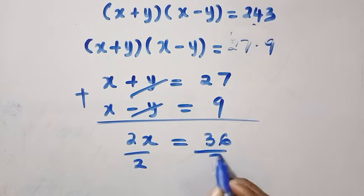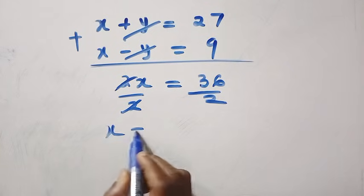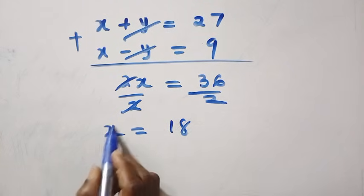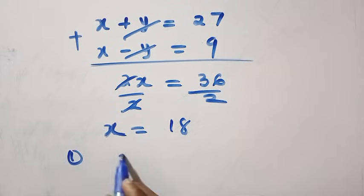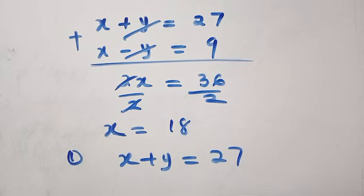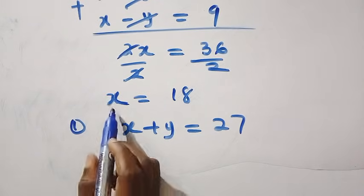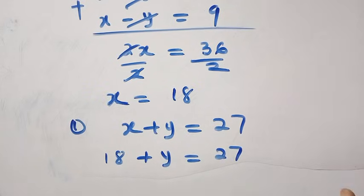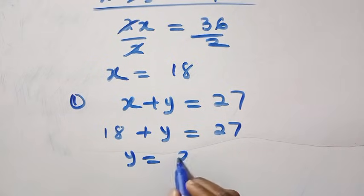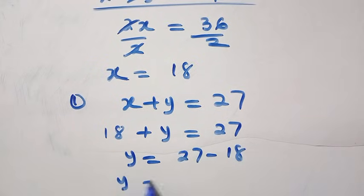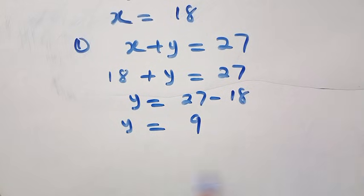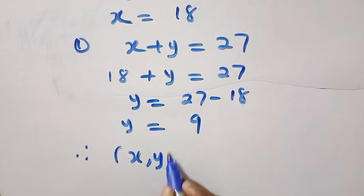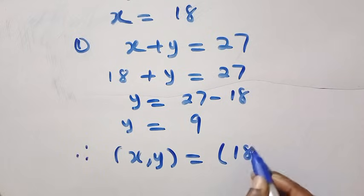Dividing 36 by 2, x equals 18. From equation 1, x plus y equals 27. Substituting x equals 18, we have 18 plus y equals 27, so y equals 27 minus 18, giving y equals 9. Therefore the third case gives x comma y equals (18, 9).